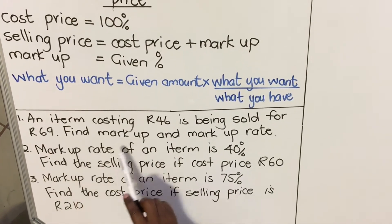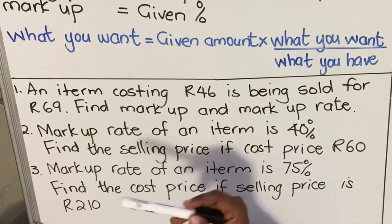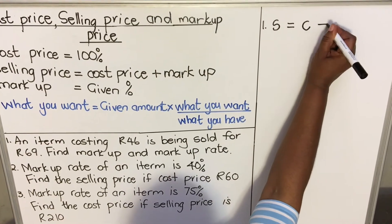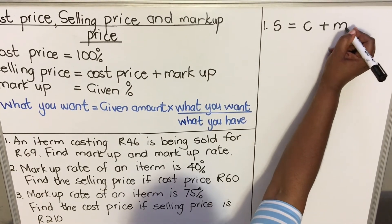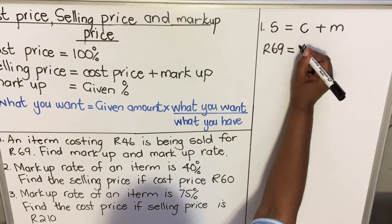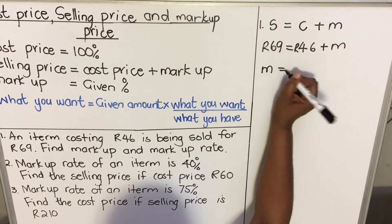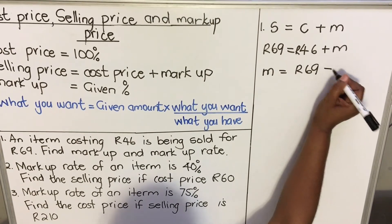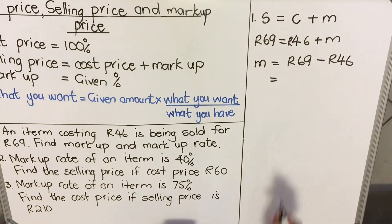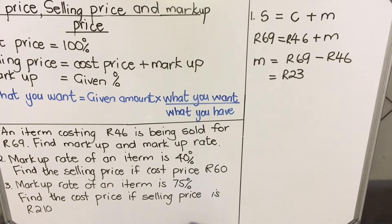Find markup and markup rate. The markup is the amount; the markup rate is the percentage. The selling price S equals cost price C plus markup M. The selling price here is 69 rands and the cost price is 46 rands, so the markup price equals 69 rands minus 46. The markup price is 23 rands — that's the first part.